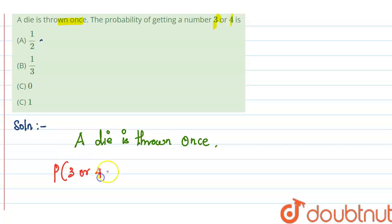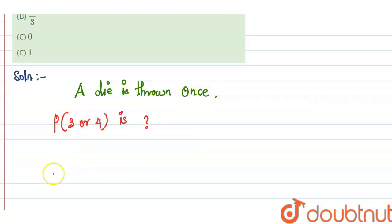So the possible outcomes—the possible outcomes when rolling a die are